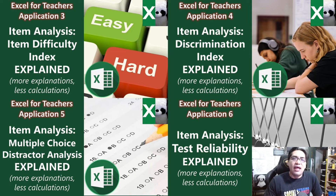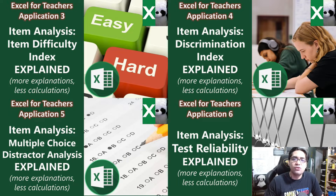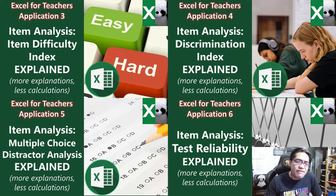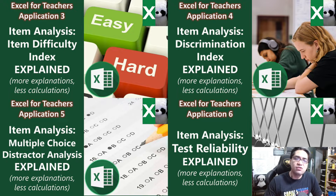This is the fourth video in this channel's series on item analysis explained. The previous videos already tackled the item difficulty index, item discrimination index, and multiple choice distractor analysis. If you haven't watched those videos yet, I invite you to watch them first. The link to those videos can be found in the description below.